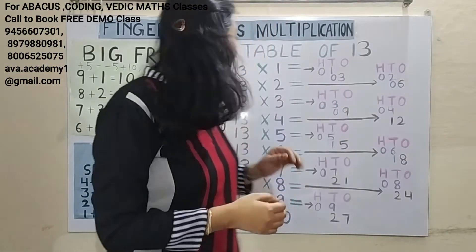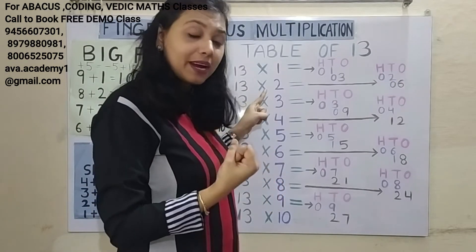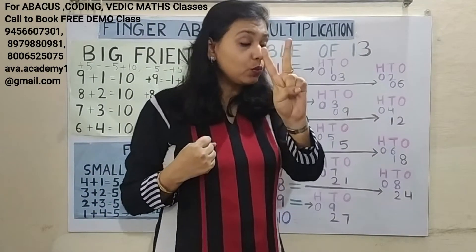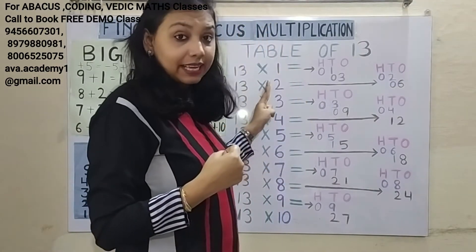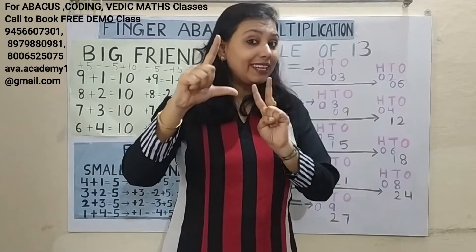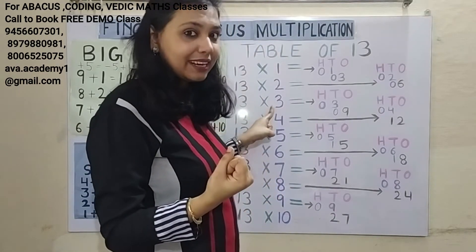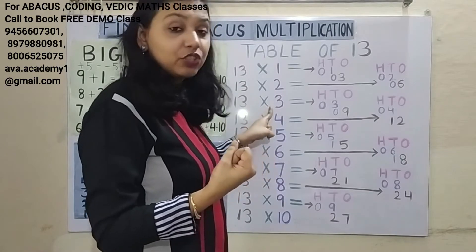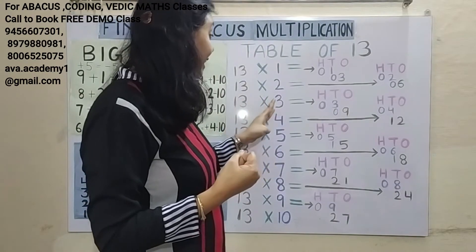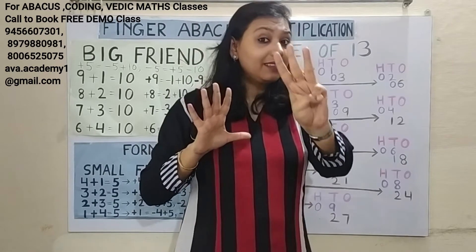13 twos — how many numbers? 3 numbers, so the answer starts from the 100s place. 1 two is 2. In 100s: 0. In 10s: 2. 3 twos are 6. In 10s: 0. In 1s: 6. Answer is 26. Next — 3-digit number, so start with 100s. 1 three is 3. In 100s: 0. In 1s: 3. 3 threes are 9. In 10s: 0. In 1s: 9. Answer is 39.